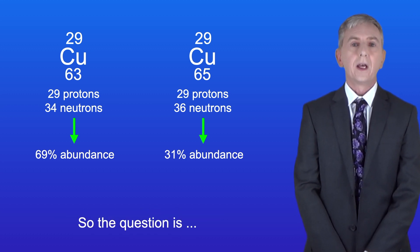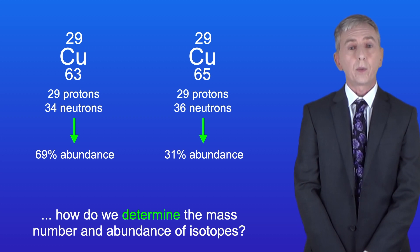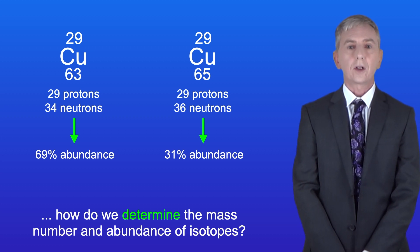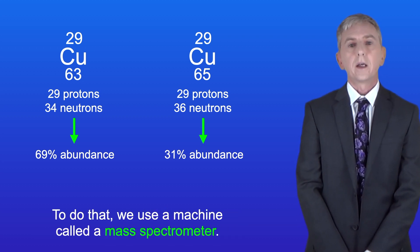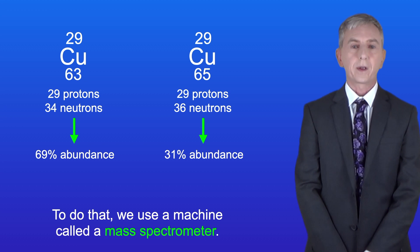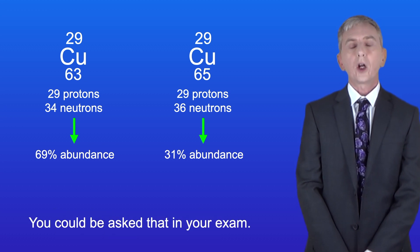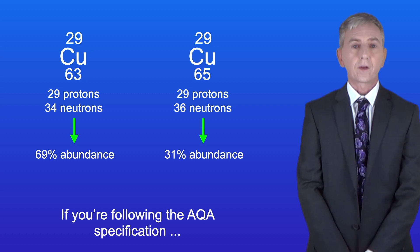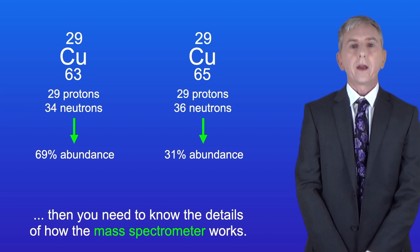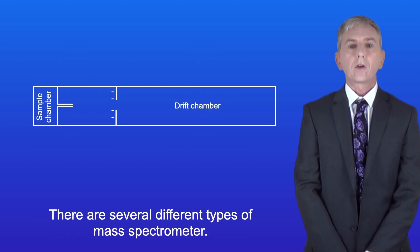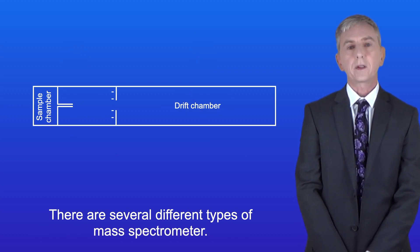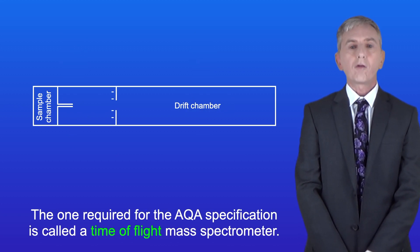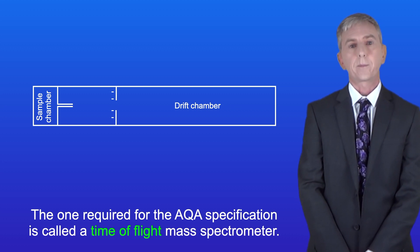So how do we determine the mass number and abundance of isotopes? To do that we use a machine called a mass spectrometer, and you could be asked that in your exam. If you're following the AQA specification then you need to know the details of how the mass spectrometer works. There are several different types but the one required for the AQA specification is called a time-of-flight mass spectrometer.